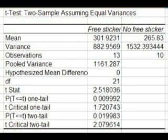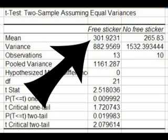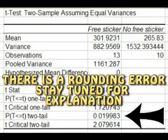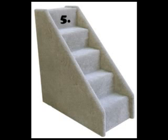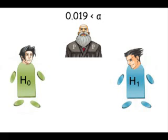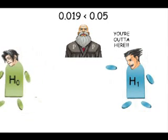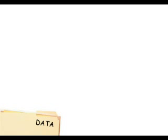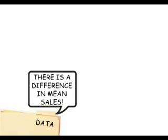The results look like this. The mean sales for the free sticker days is $301.92, while the mean sales for the no-free-sticker days is $265.83. There does seem to be a difference. For step 4, you see that the p-value for the two-tailed test is given as 0.019. Step 5: the calculated p-value of 0.019 is less than alpha, which we decided was 0.05, so you reject the null hypothesis. Helen would like to know what that means, so you explain that the data she has collected indicates that there is a difference in mean sales depending on whether you offer a free sticker or not.